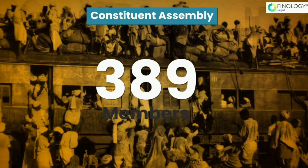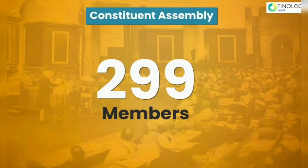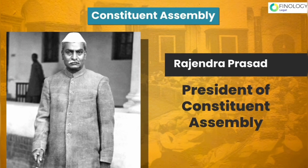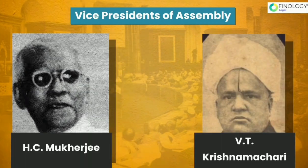Initially the Constituent Assembly had 389 members; however, after the partition on 14th August 1947, the number of members reduced to 299. Among them, Sachidananda Sinha was the oldest member, who was appointed as the temporary president of the Constituent Assembly. Rajendra Prasad was appointed as the president of the Constituent Assembly.